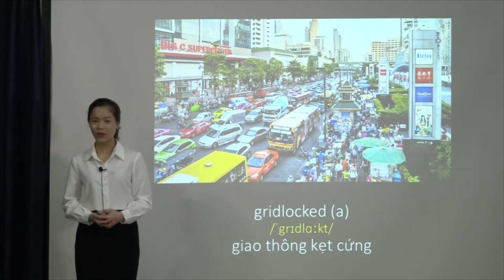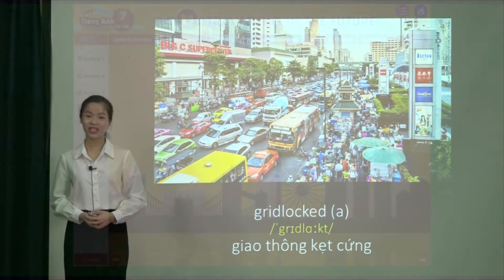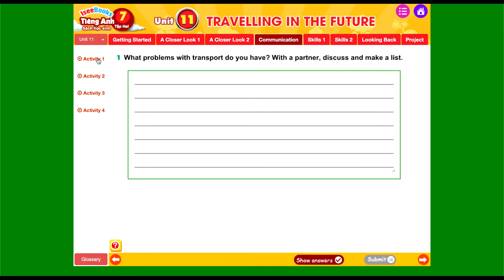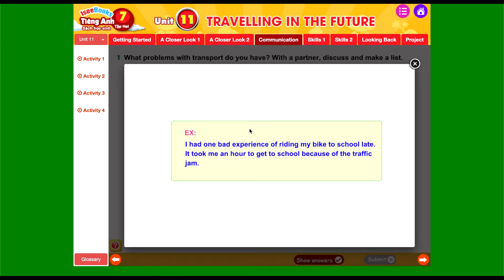Bây giờ cô và các em sẽ cùng nhau đến với hoạt động trên IC Books. Activity 1: 'What problems with transport do you have? With a partner, discuss and make a list.' Khi tham gia giao thông, sẽ có một số vấn đề mà các em gặp phải. Các em có thể bàn luận cùng với người bạn của mình để đưa ra những đáp án, danh sách về các vấn đề gặp phải.